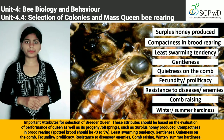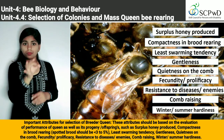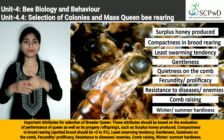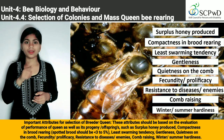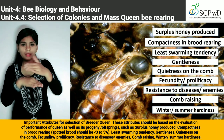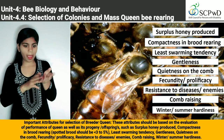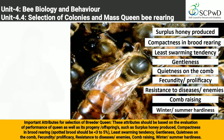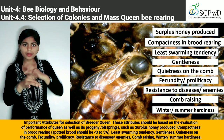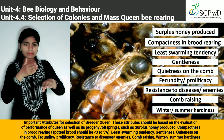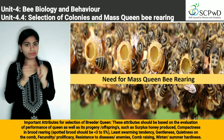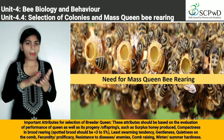Further selection attributes include: least swarming tendency, gentleness, quietness on the comb, fecundity, prolificacy, resistance to disease and enemies, and hardiness during both winter and summer conditions.